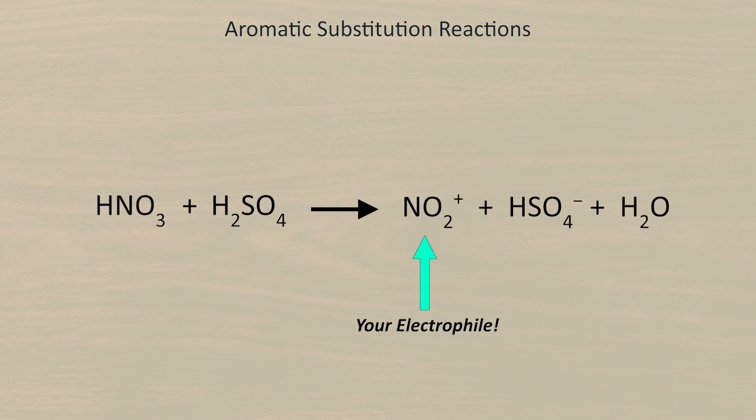Your electrophile will be a nitronium ion, which you'll make by mixing nitric acid together with some sulfuric acid. When these two get together, they form nitronium, hydrogen sulfate, and water.